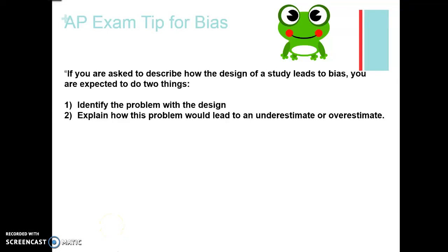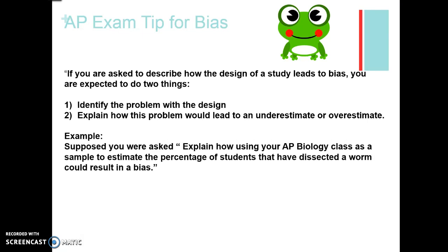Let's talk about what you'd need to do on the AP exam if asked to discuss bias. Number one, you're going to have to do two things if asked to describe or discuss the bias of some sort of sampling design: identify in context the problem with the design, and then explain how this problem would systematically lead to an overestimate or underestimate of the population proportion, mean, or whatever you're examining.